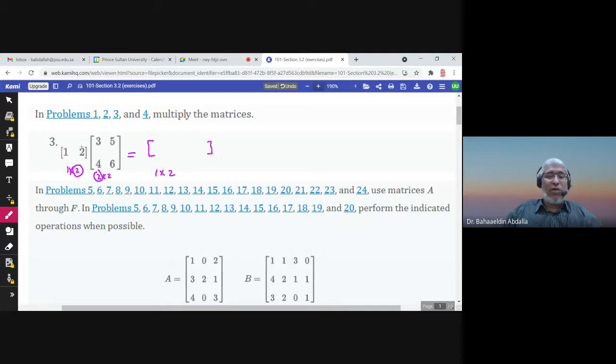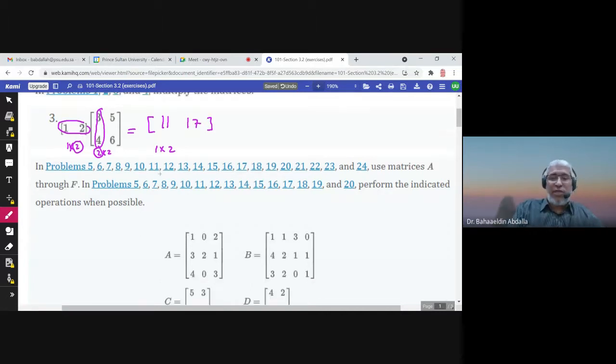Let us start by multiplying this row by this column. So 1 times 3 plus 2 times 4, that's 11. And then 1 times 5 plus 2 times 6, and that's 17. So that's the answer.